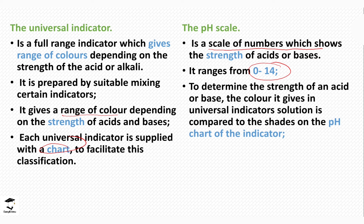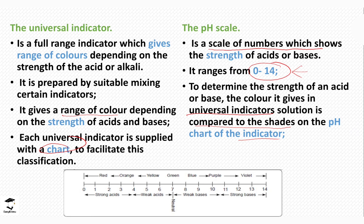To determine the strength of an acid or base, you add a few drops of the universal indicator to the solution. Whatever color you get, you compare it to the shades on the pH chart, which gives you a specific number telling you whether the acid or base is strong or weak. An example of the pH scale is shown here, ranging from 0 to 14.